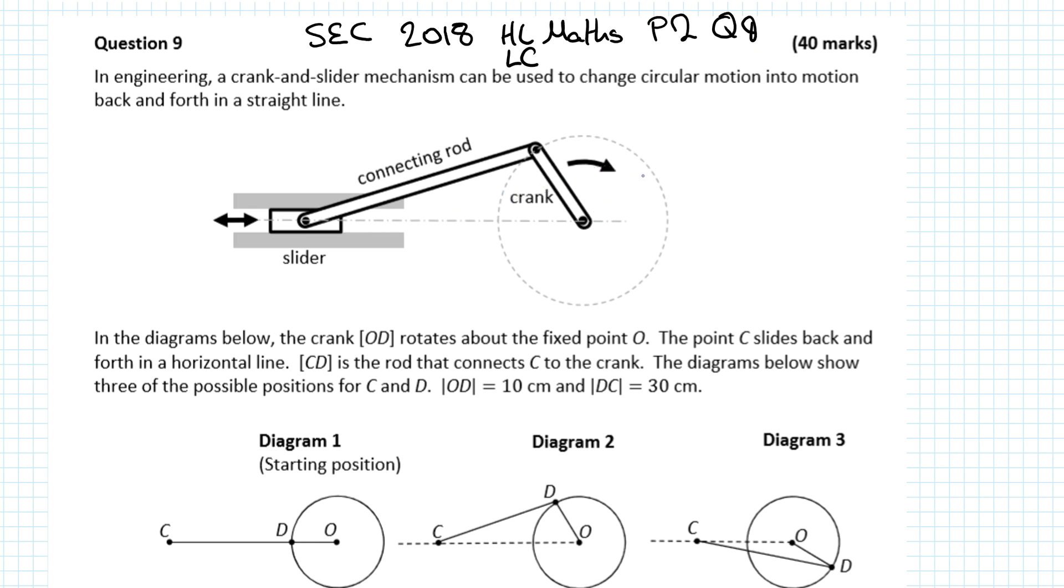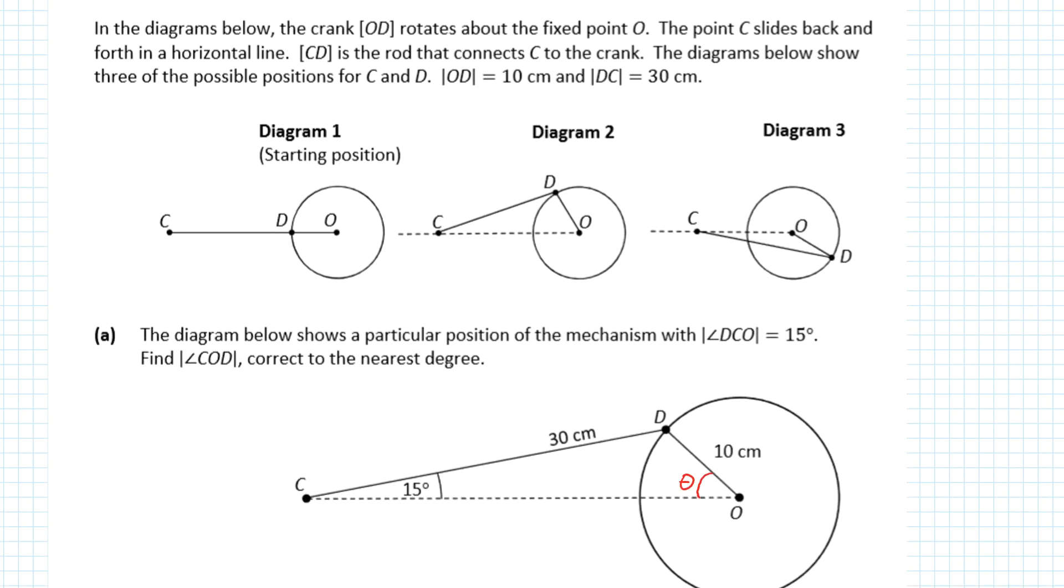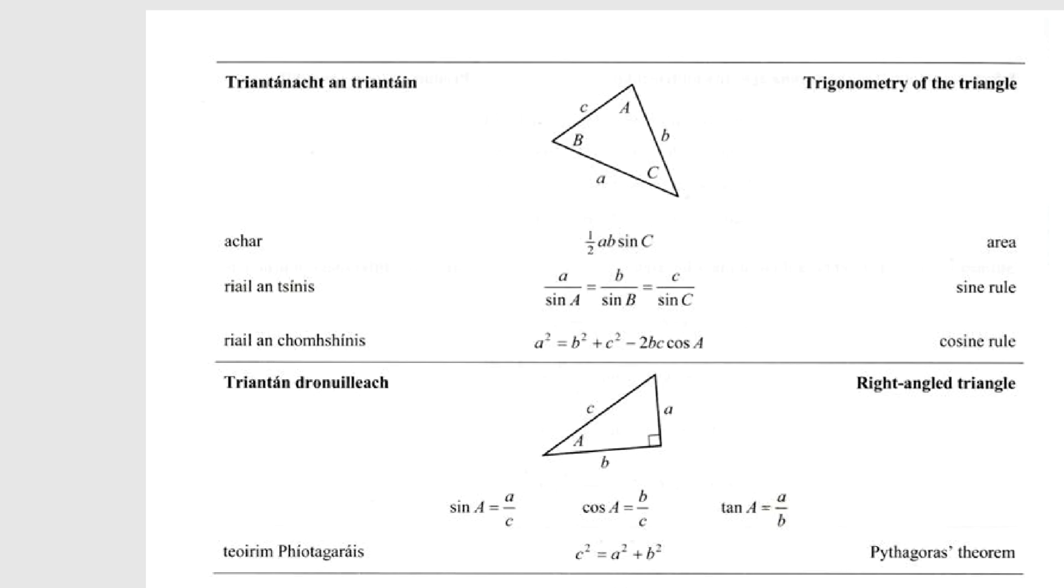The main idea of the question: in the diagram below, a particular position of the mechanism is shown with angle DCO being 15°. We want to find angle COD. How do we do that? As I say to my students, there are two types of triangles: right-angled and non-right-angled. If you go to your log tables page 13, you'll see both types.